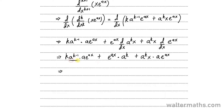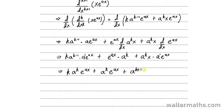Multiplying a to the power of k minus 1 by a, which is a to the power of 1, we add the powers: k minus 1 plus 1 gives us k. So we'll have k of a to the k of e to the ax. Plus, multiplying those two gives a to the k of e to the ax. And for the last term, multiplying a to the k by a to the power of 1 gives a to the power of k plus 1, so that's a to the k plus 1 of x e to the ax.